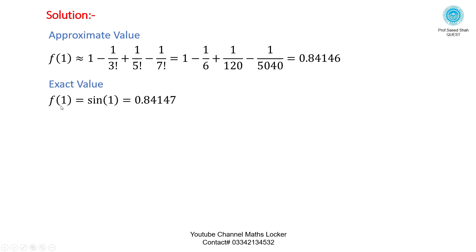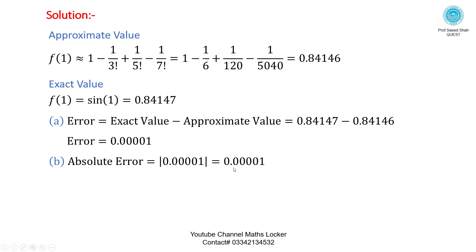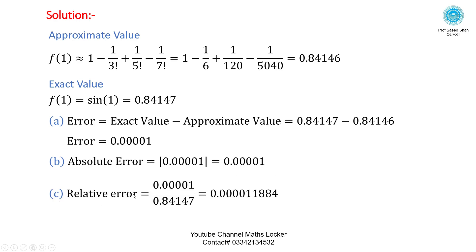For the exact value, we put x equal to 1 in f of x equal to sin x, then we get the exact value. For error: this is the difference between the actual value and the approximate value. For absolute error: using the absolute error formula. For relative error: using the relative error formula, you can calculate each result.